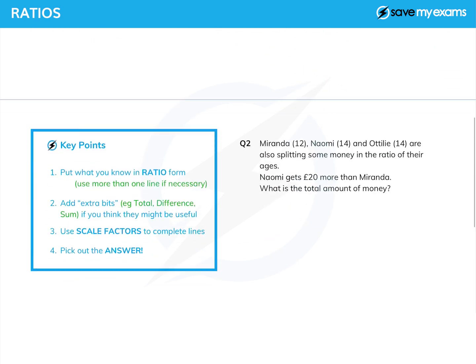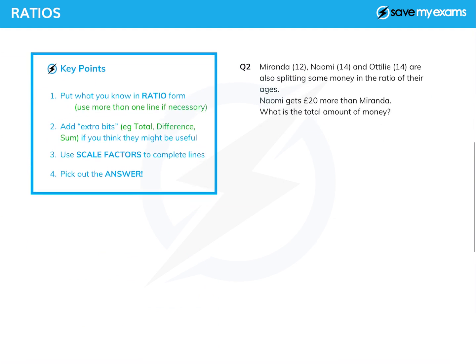Right, let's have a look at another question, slightly different but the same principle. This time we have three girls splitting money in the ratio of their ages, and they are Miranda, Naomi, and Otterley, and they are 12, 14, and 14. So again, let's write down that information in ratio form: Miranda to Naomi to Otterley.